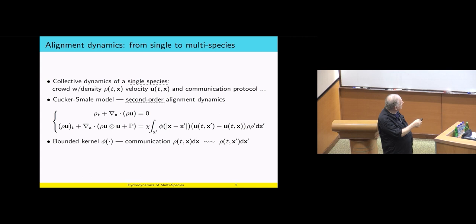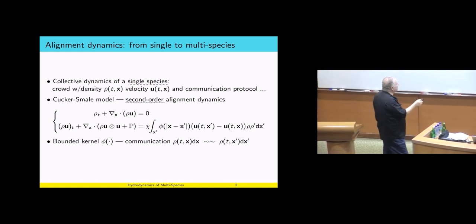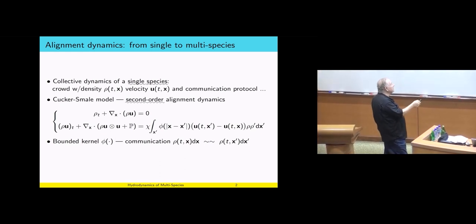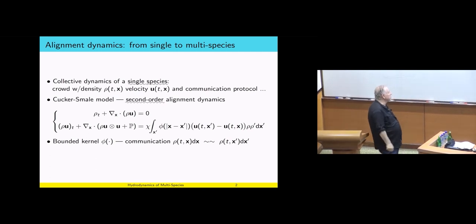We have a communication kernel depending on the distance. We have the difference of velocities. Here is pair 1, here is pair 2 at position x prime. Here is a blob of density rho at point x, and here is a blob of density rho prime. We assume we have a bounded communication kernel, which tells us how this blob connects to communicate with that blob.